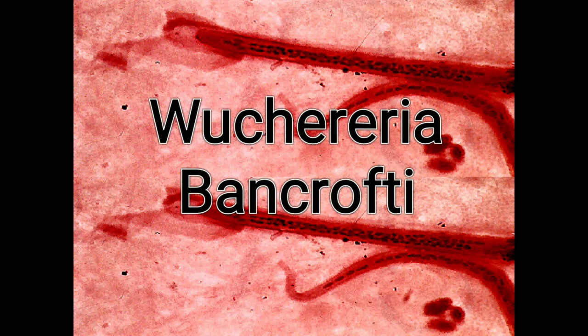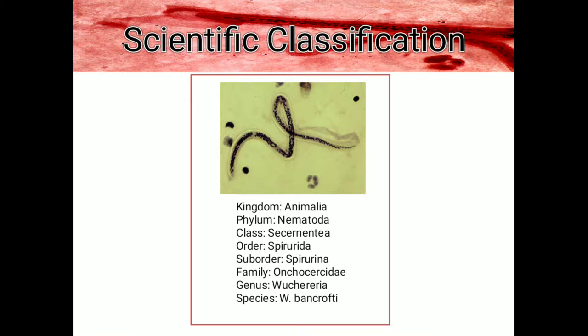Good day everyone. I will be discussing Wuchereria bancrofti. W. bancrofti belongs to the Kingdom Animalia and Phylum Nematoda. It is under the Class Secernentea and Order Spirurida, Suborder Spirurina, and it comes from the family Onchocercidae.